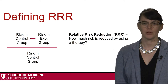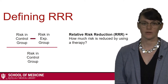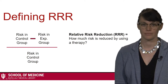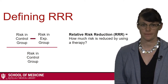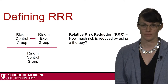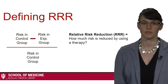The formula for relative risk reduction is: risk in the control group (aka CER), minus the risk in the experimental group (aka EER), divided by the risk in the control group.